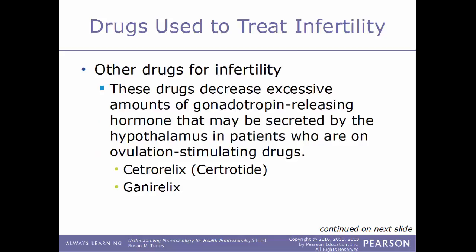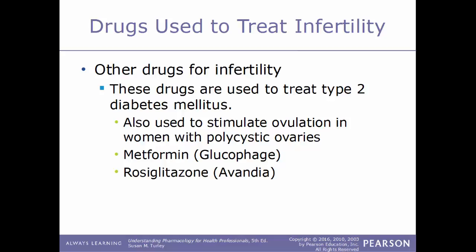Other drugs used to treat infertility include drugs that decrease excessive amounts of gonadotropin-releasing hormone secreted by the hypothalamus in patients already on ovulation-stimulating drugs — examples are cetrorelix (Cetrotide) and ganirelix. Additionally, drugs used to treat type 2 diabetes mellitus, such as metformin (Glucophage) and rosiglitazone (Avandia), are also used to stimulate ovulation in women with polycystic ovaries.